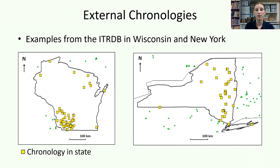The ITRDB curates vetted tree ring data from a variety of species and time periods, including from Wisconsin and New York, where one can find the Canadia Council House and a variety of other historical buildings that institutions like the Cornell Tree Ring Laboratory at Cornell University have dated. Specialized software can analyze the ring width data and suggest the likeliest fit against securely dated chronologies. However, visual comparison of the line graphs of the chronologies with ring width plotted against the year is also key.